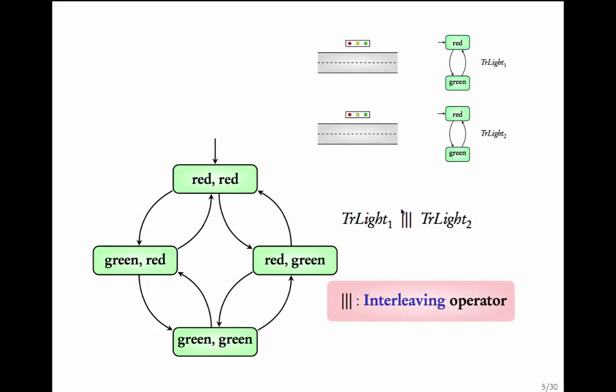We denote this transition system as traffic light 1 interleaved with traffic light 2. This symbol with three lines is called the interleaving operator. As the name suggests, this transition system represents the behavior where the actions of the participating components are interleaved with each other.